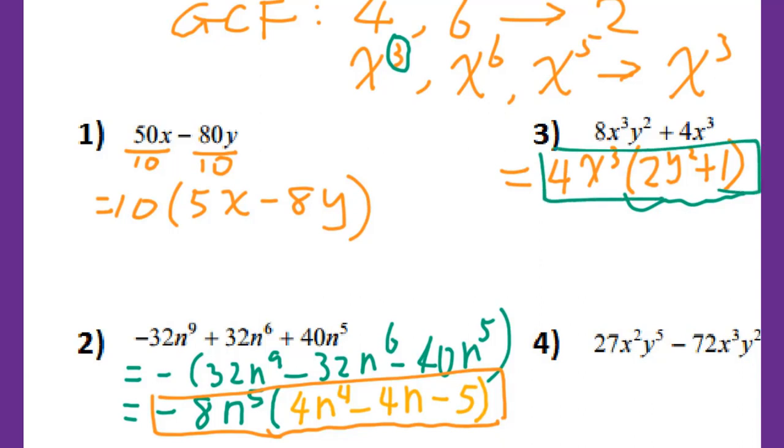Let's go to number 4. GCF for 27 and 72 is 9. GCF for variable x is x squared. And for the y, it's y squared. This is the lowest exponents, so I take these outside, x squared y squared.